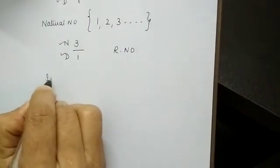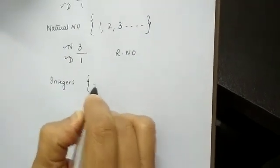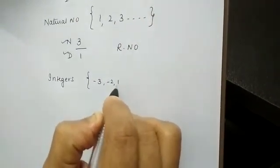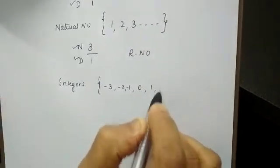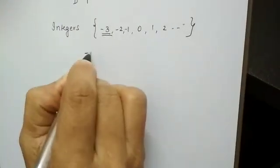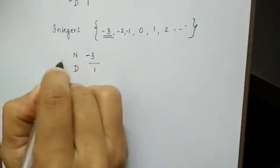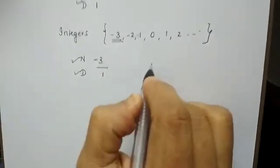Let us go to integers. What are integers? Negative numbers, 0, and positive numbers. Let us consider -3. -3 is in the numerator's place and 1 is in the denominator's place. So they have a numerator and a denominator. So integers are also rational numbers.